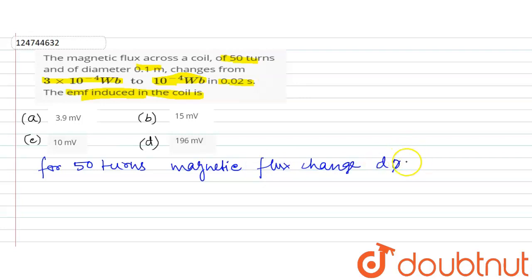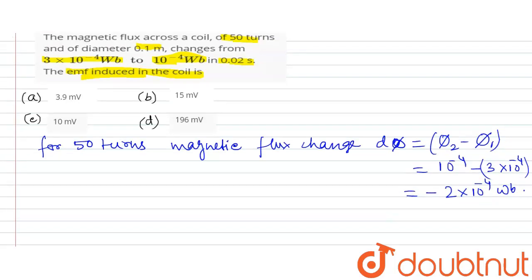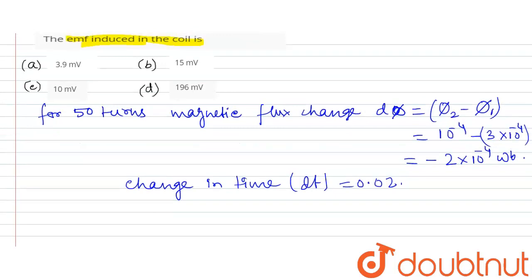dφ is final minus initial, so φ2 minus φ1. φ2 is the final and φ1 is the initial value. So dφ = 10⁻⁴ minus 3×10⁻⁴, which gives minus 2×10⁻⁴. The change in time dt is equal to 0.02 seconds. Now we calculate the induced EMF.